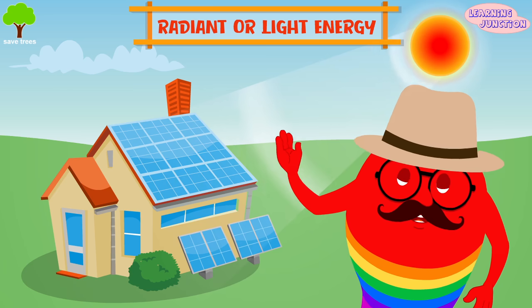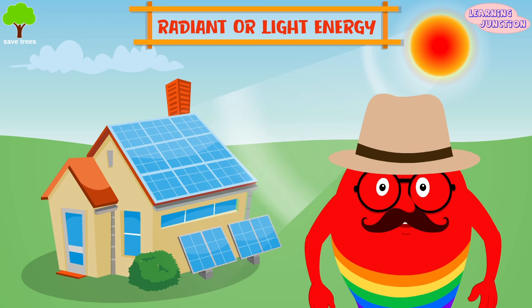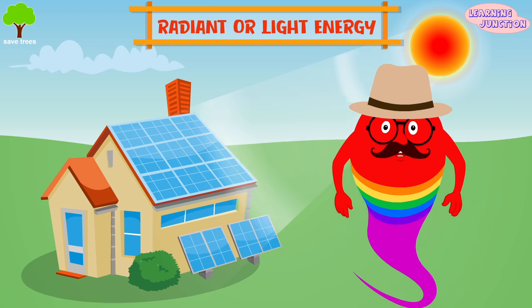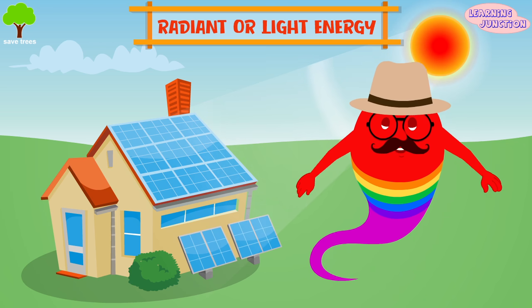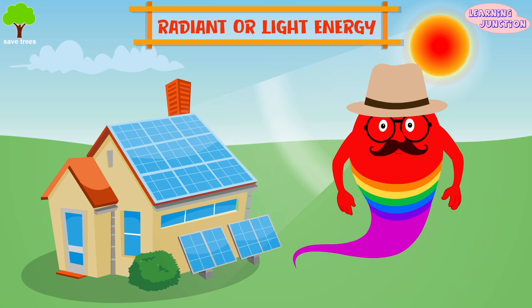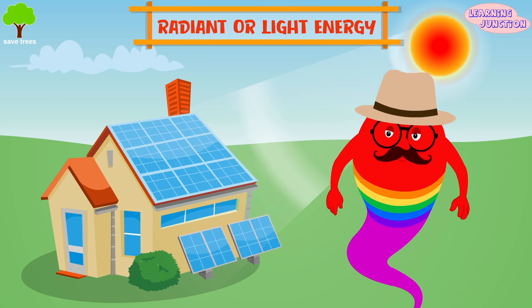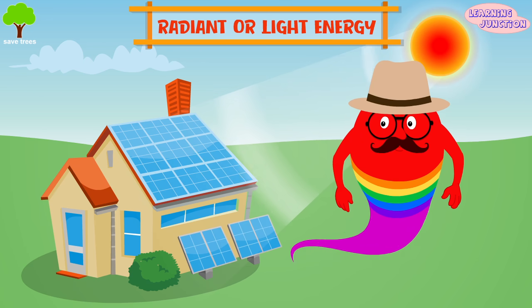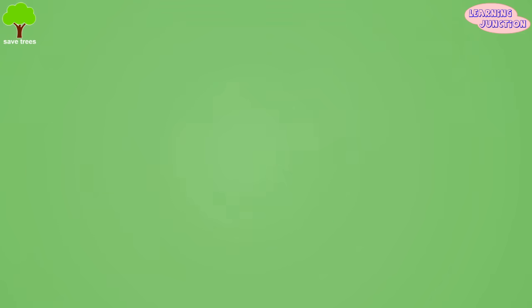Radiant or light energy. It is a form of electromagnetic radiation. Light travels in waves and is the only kind of energy humans can see. For example, the energy from the sun.